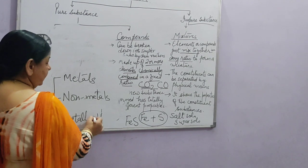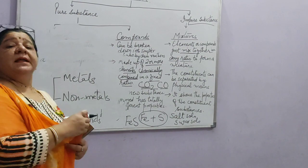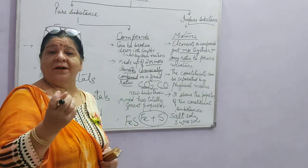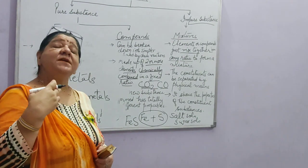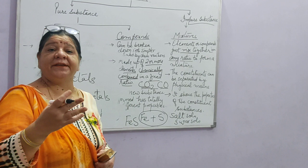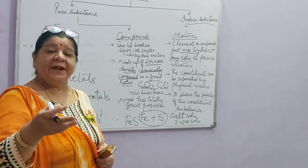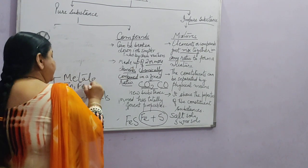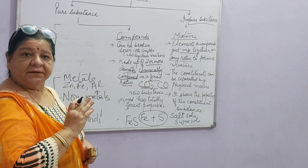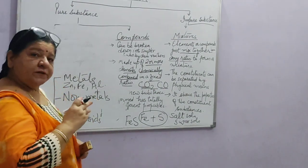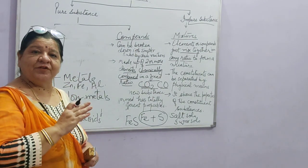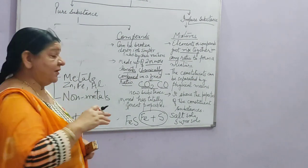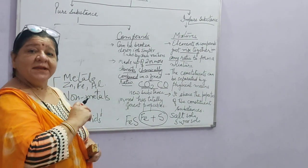Metals have luster, are very hard, cannot be broken easily, and have high malleability, ductility, high melting point, and boiling point. Examples include zinc, iron, and aluminium. Non-metals are the opposite — they do not have luster, have no significant melting and boiling points, and are poor conductors of heat and electricity, while metals are good conductors. Non-metals are non-malleable and non-ductile.